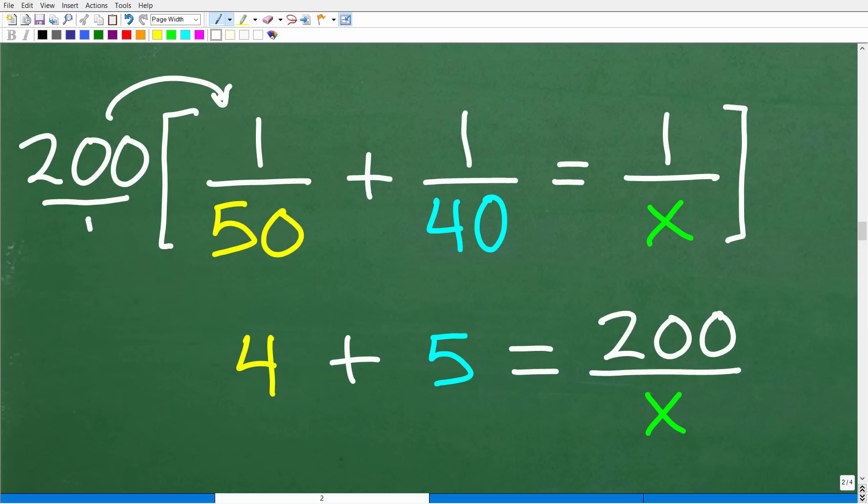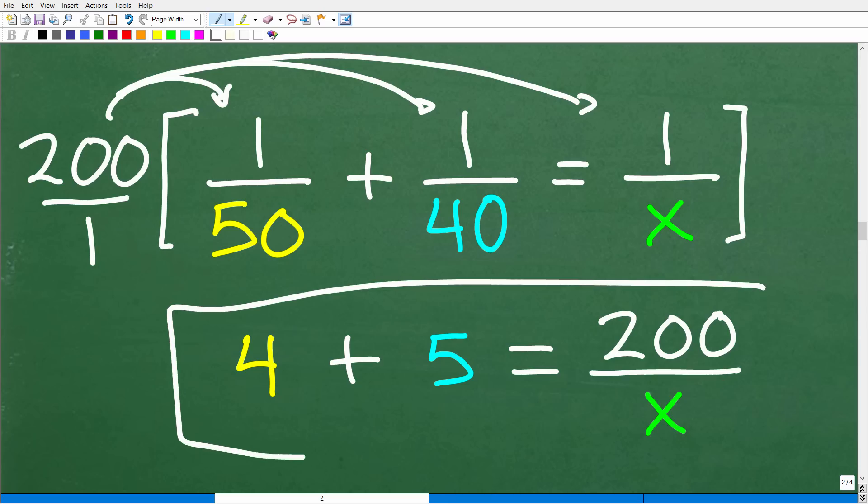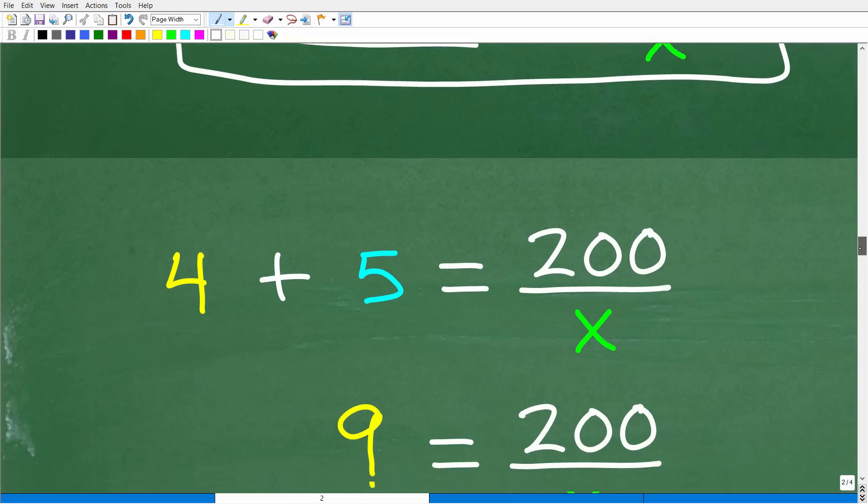So 200 times one over 50, that's going to be 4. And then 200 times this one over 40 is 5. So multiplying fractions here, 200 times one over 40 is just 200 divided by 40, which is 5. And then 200 times one over X is going to be 200 over X. So this is a much simpler equation to work with. Clearly we can see here we can add these numbers up, 4 and 5.